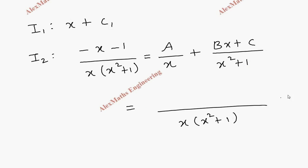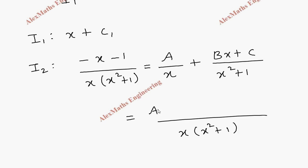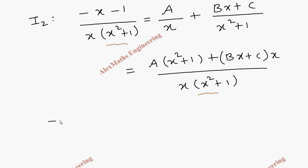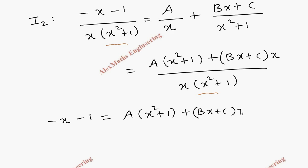So here we have A times (x² plus 1) plus (Bx plus C) times x. We notice both sides have the same denominator, so we are going to equate the numerators on both sides. We have minus x minus 1 equal to A times (x² plus 1) plus (Bx plus C) times x.